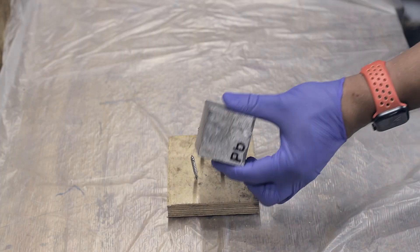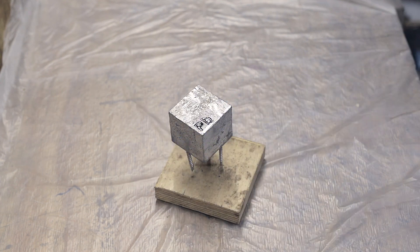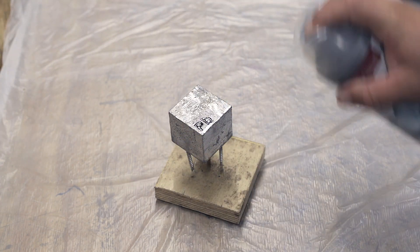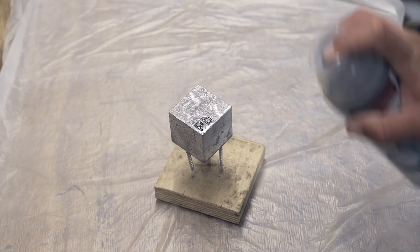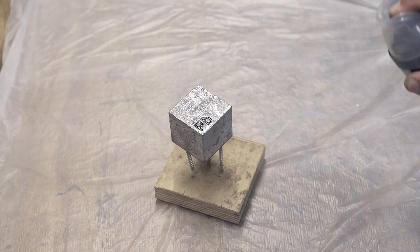As the final step, I cover the cube in at least 5 layers of clear acrylic spray coating to seal the surface so the cube can be handled with less anxiety. No matter what, I still recommend a good hand washing after touching the cube.